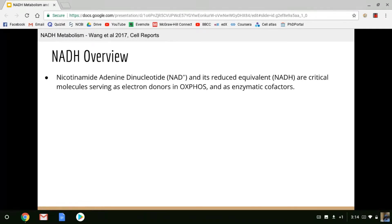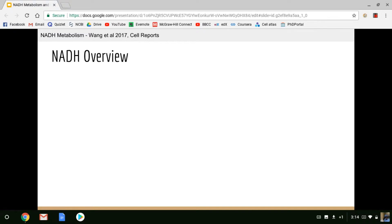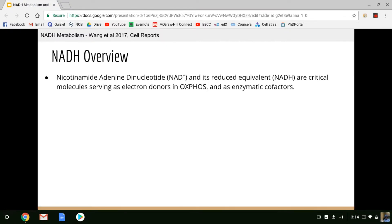NAD, or nicotinamide adenine dinucleotide, and its reduced equivalent, NADH, are critical molecules serving as electron donors in oxidative phosphorylation. They're also important as enzymatic cofactors. Remember that reduction is the gain of an electron, which in biology often involves the transfer of a hydrogen ion with it, a proton. So NADH is the reduced version of NAD.